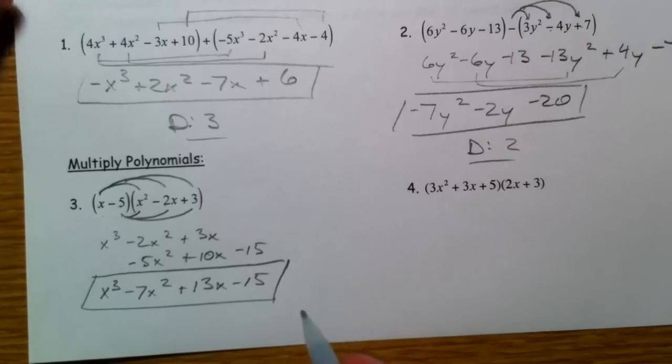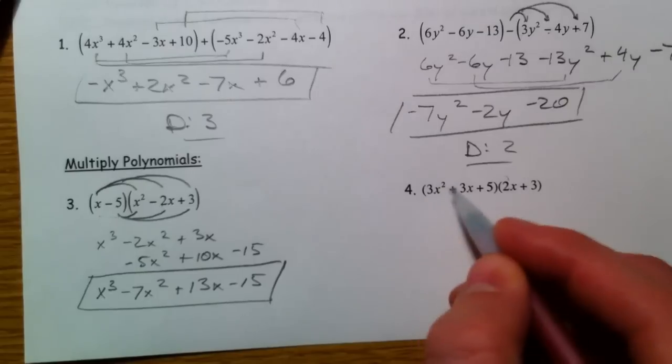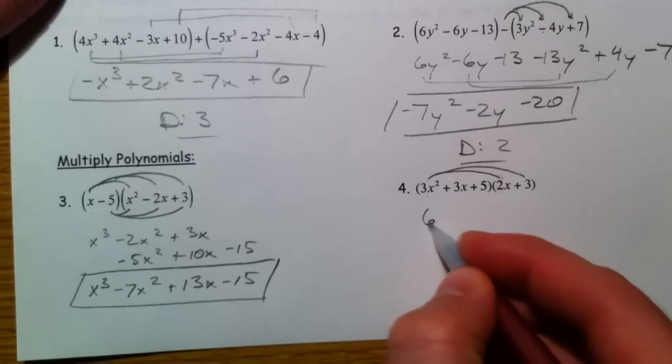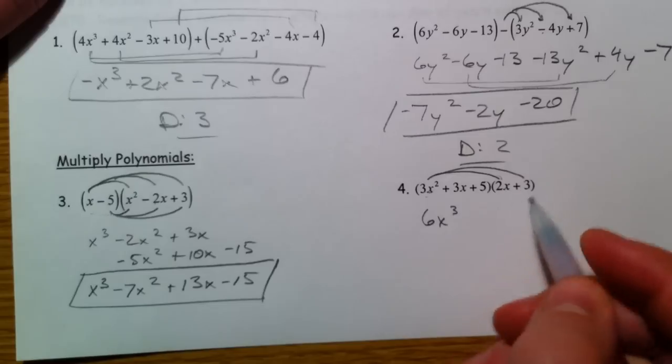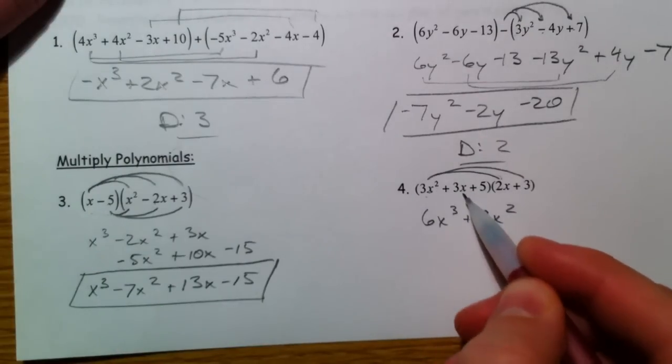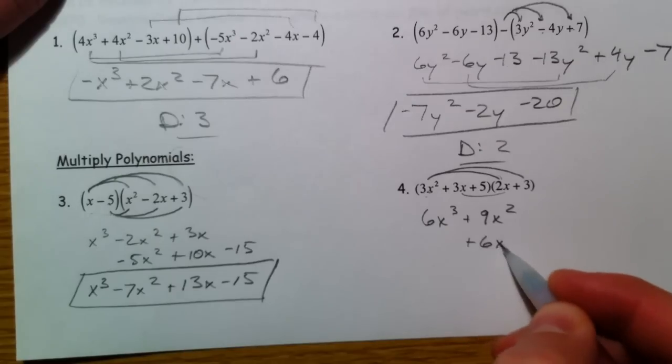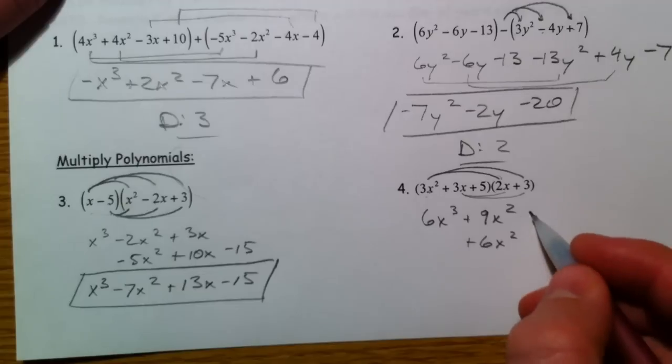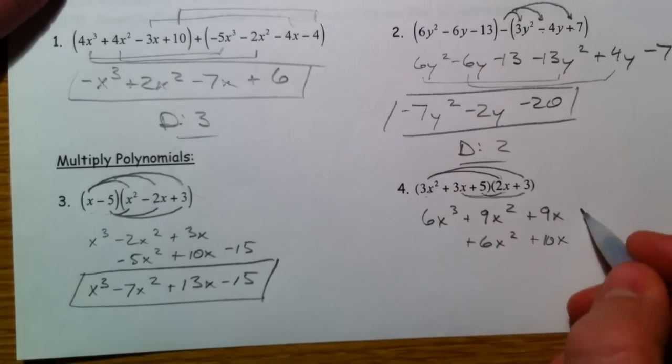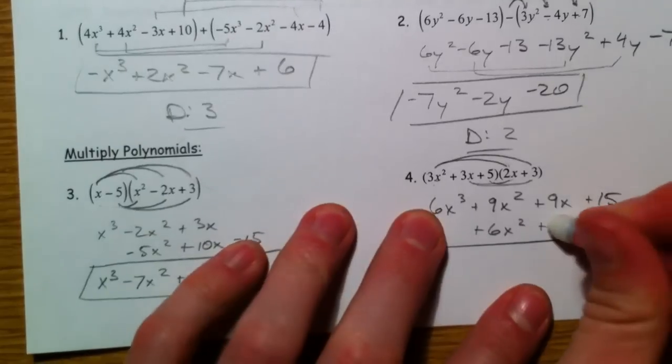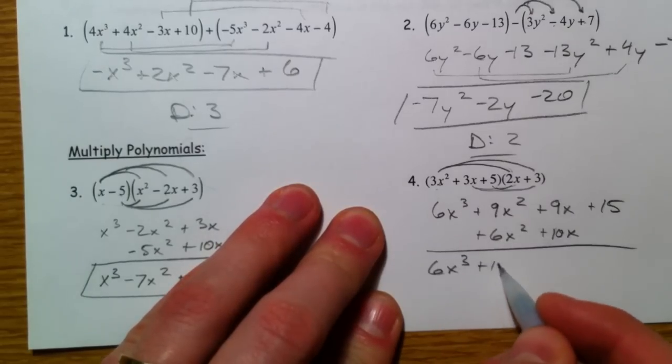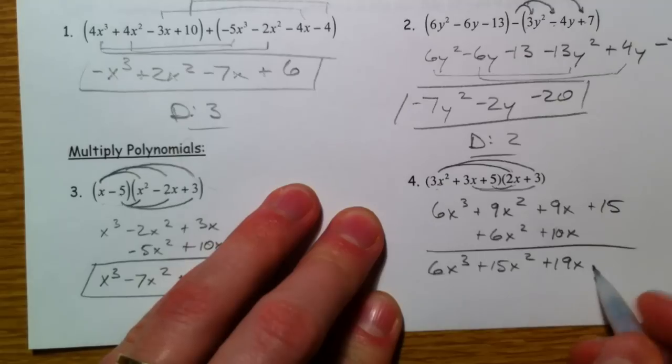So number 4 is the exact same thing, just backwards. So if you want to, you can start from the 2x and go this way. But I'm going to show you that this is the same as doing this. So 3x squared times 2x is 6x cubed. 3x squared times 3 is 9x squared. Then 3x times 2x is 6x squared, times 3 is 9x. And 5 times 2x is 10x. And 5 times 3 is 15. So you combine all your like terms. 6x cubed, 15x squared plus 19x plus 15.